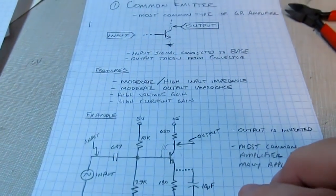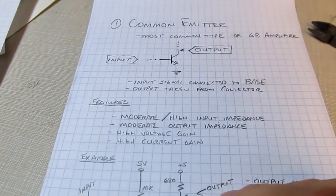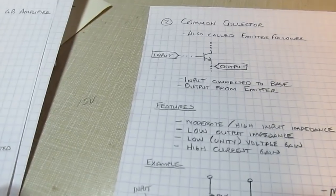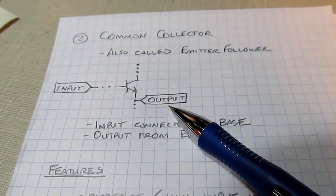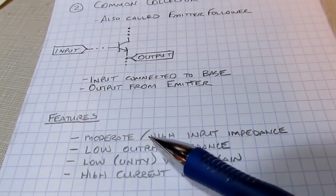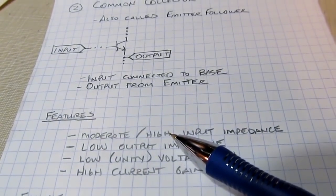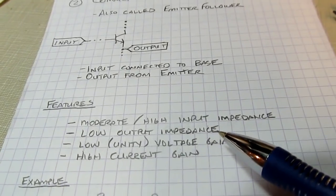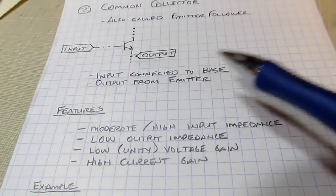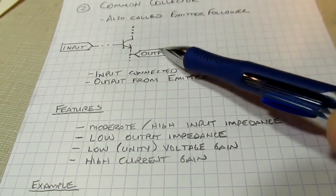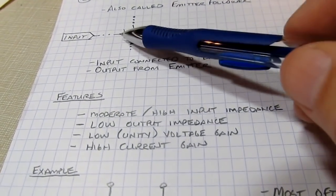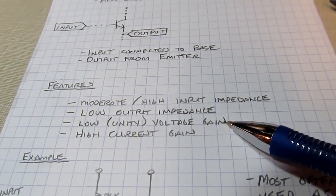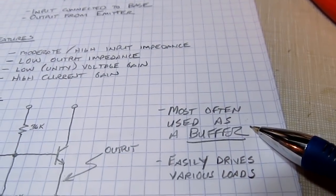Very common for almost all amplifier configurations. The next most common one is called the common collector, also called an emitter follower amplifier, where the input is connected to the base but the output is taken from the emitter. It has a moderate to high input impedance similar to the common emitter — it doesn't load the circuit we're connecting to — and it also has a nice low output impedance, making it easy to drive a load. The trade-off is that it has no voltage gain at all; the output follows the input with just a little DC voltage shift. But it does have a lot of current gain, making it a good buffer amplifier — it can take the output from a common emitter amplifier and buffer it so it can drive a load.